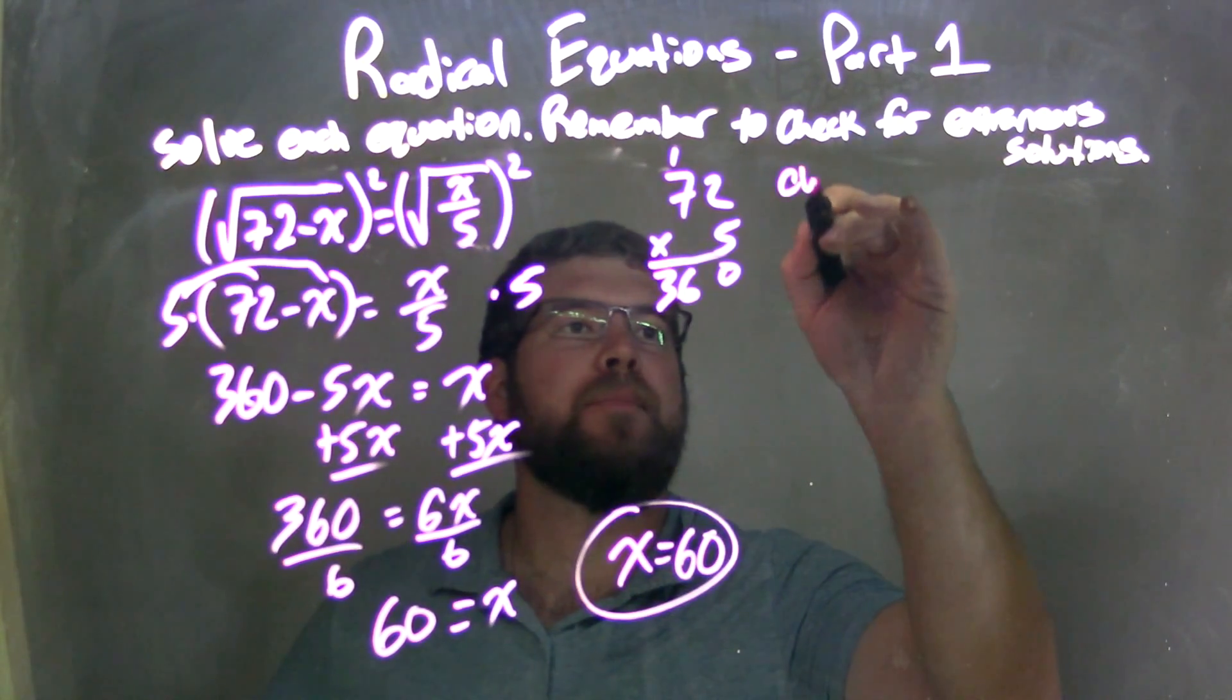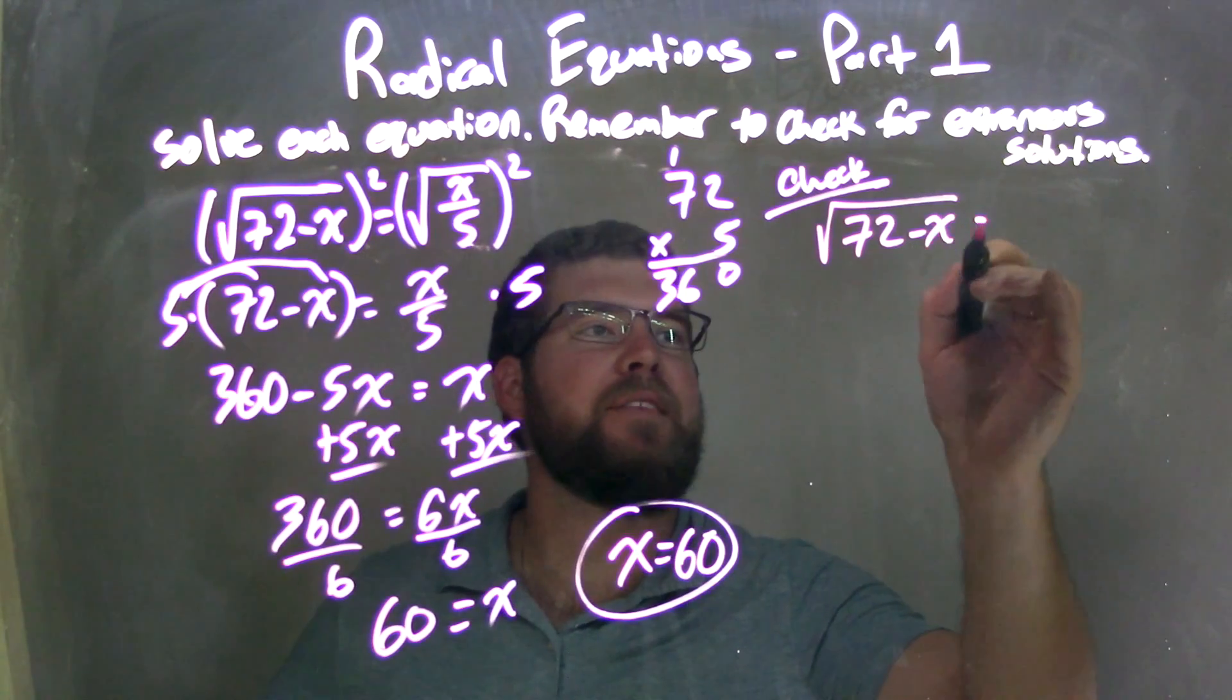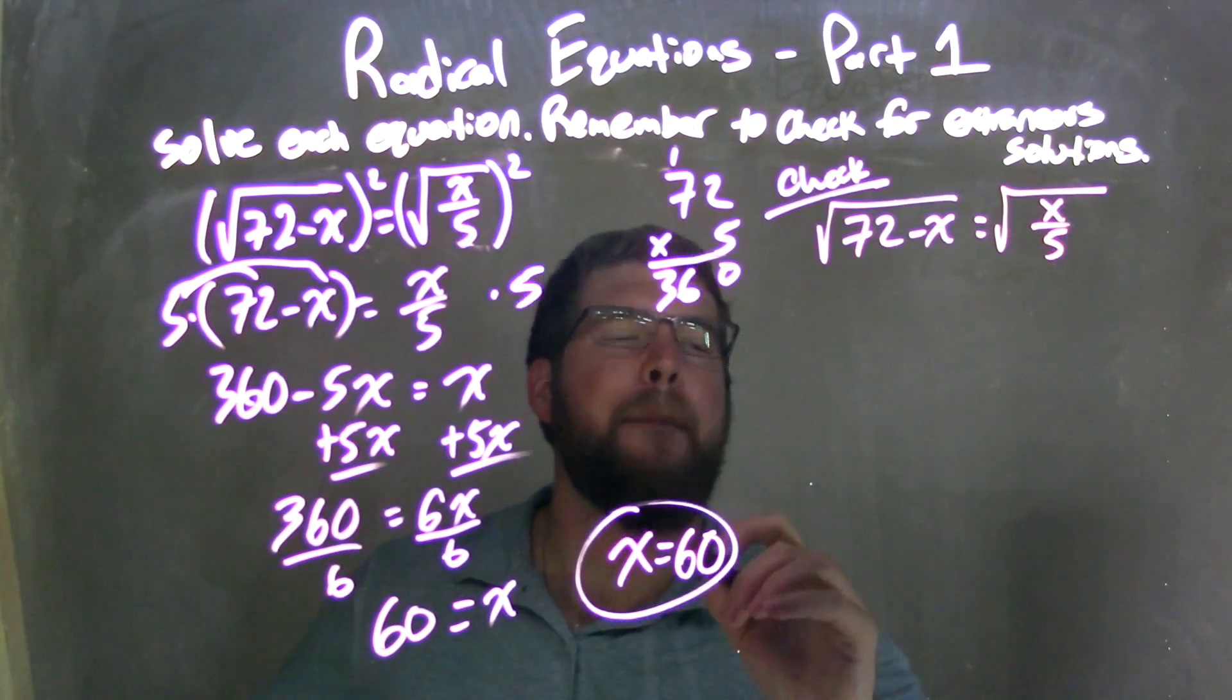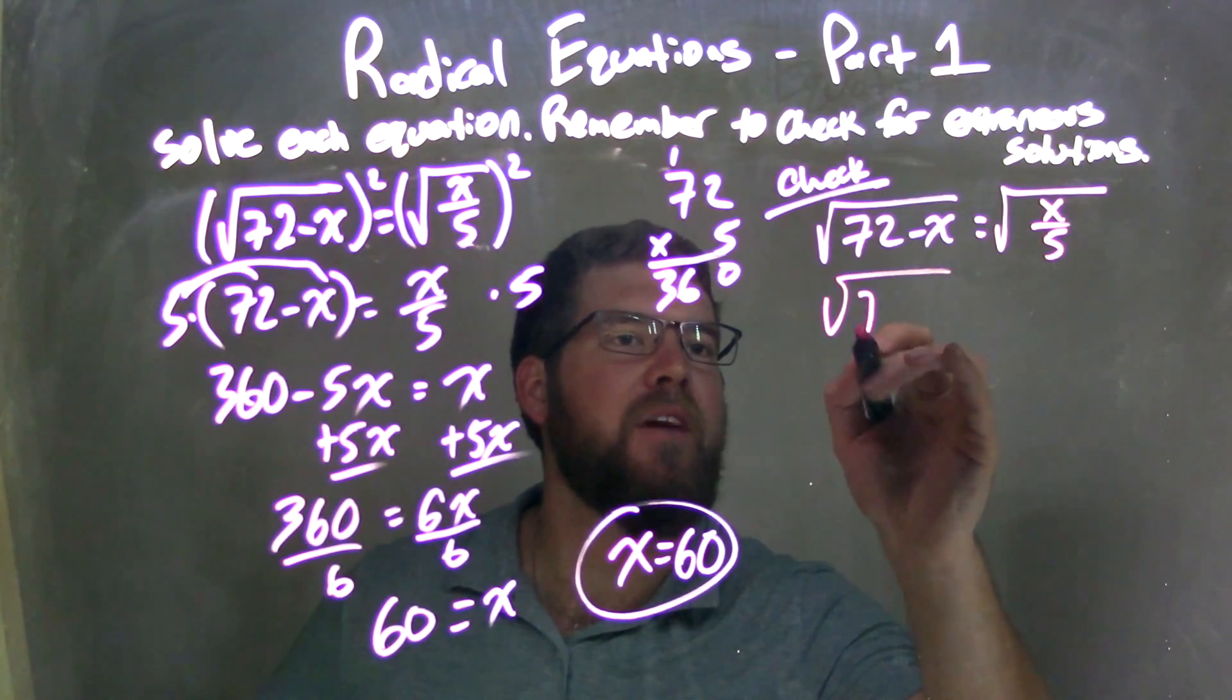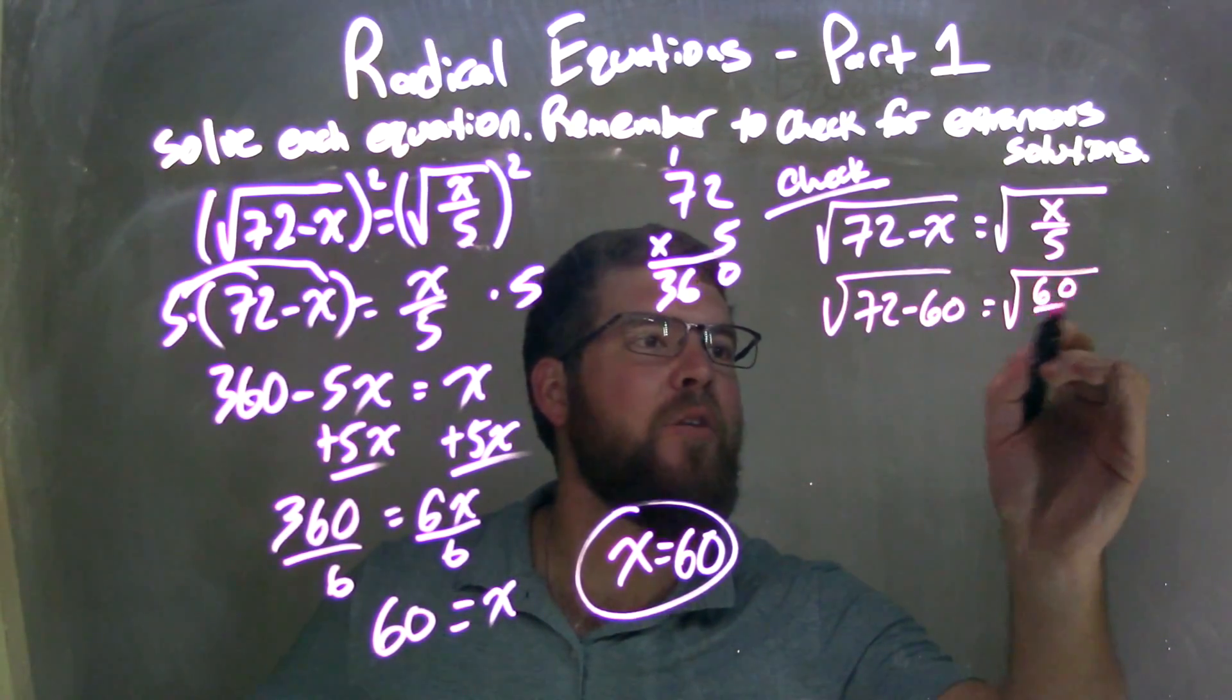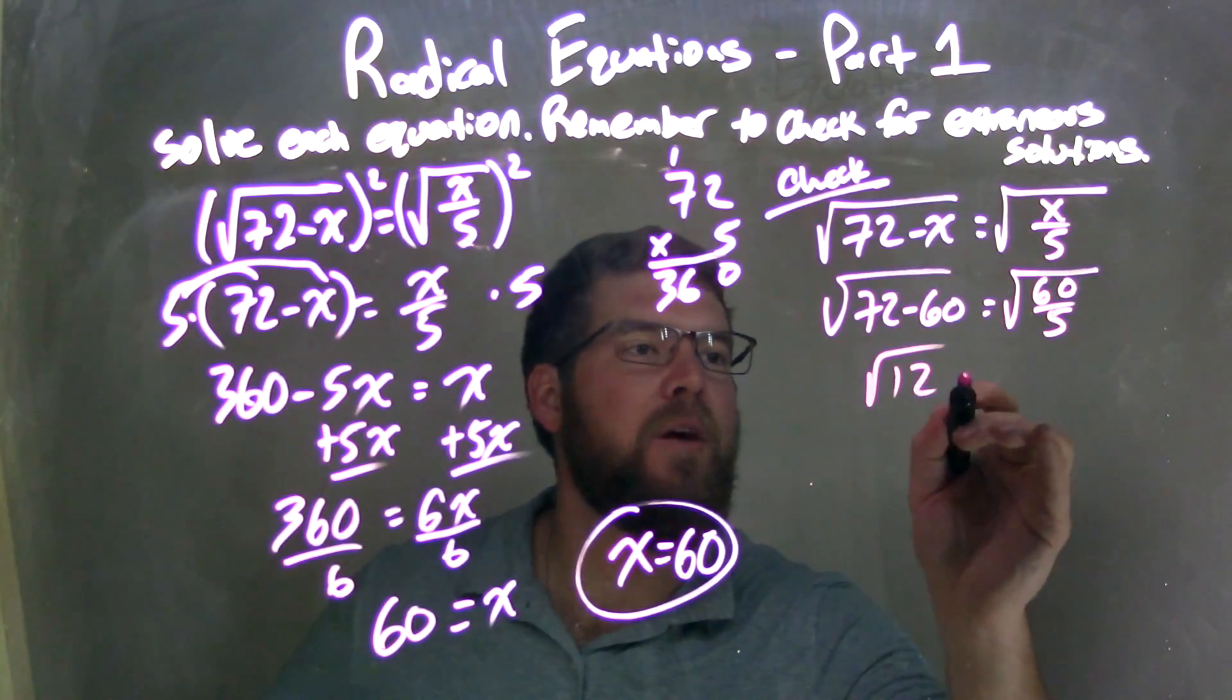So let's check. We have the square root of 72 minus x equals the square root of x over 5. Plug 60 in for x. 72 minus 60 equals 60 over 5. 72 minus 60 is 12. Square root of 12 there.